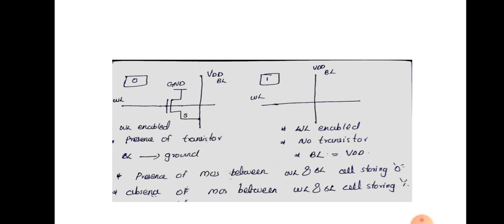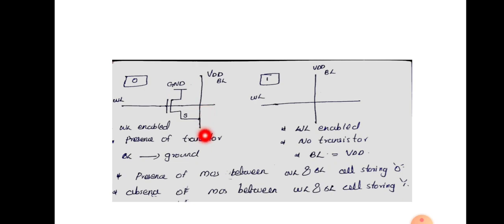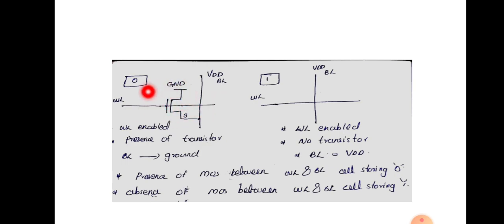In the case of OR based ROM, there will be word line and bit line. In the case of OR based ROM, the bit line is connected to zero or ground by a pull down device. And for the word line, there is a transistor and its drain is connected to VDD.